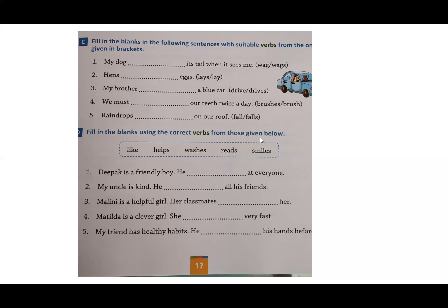Moving on to Exercise D: fill in the blanks using the correct verbs from those given below — helps, washes, reads, smiles. First one: Deepak is a friendly boy, he dash at everyone. The verb that will come here is smiles. He's a friendly boy, he smiles at everyone.